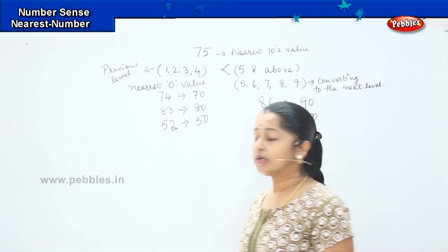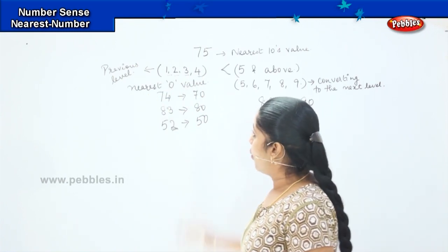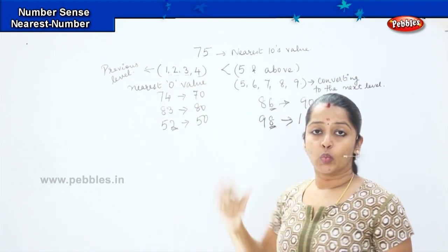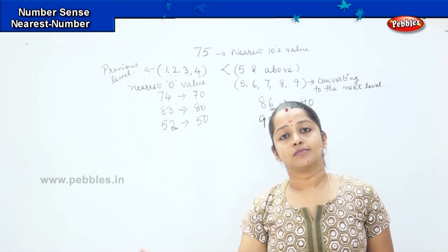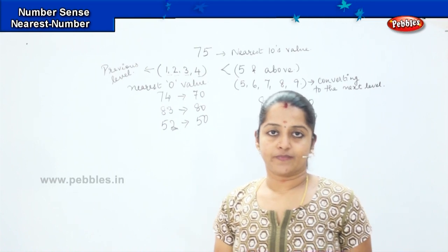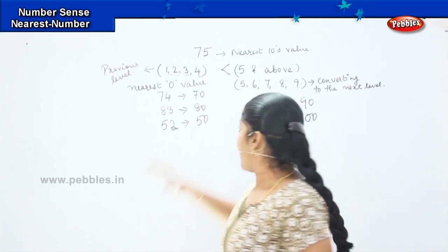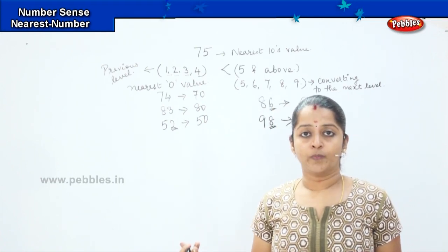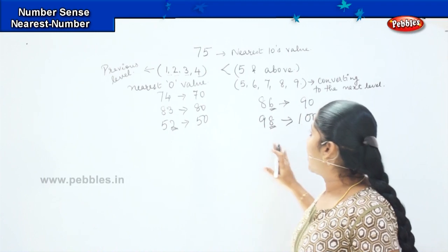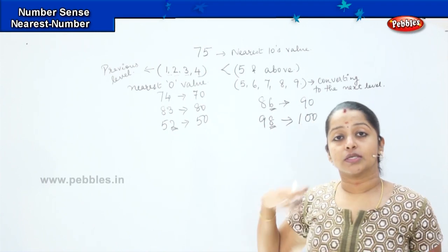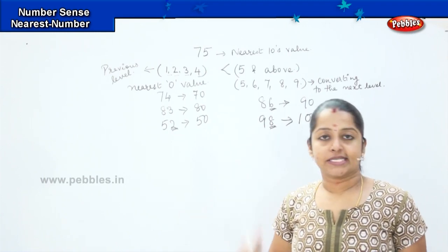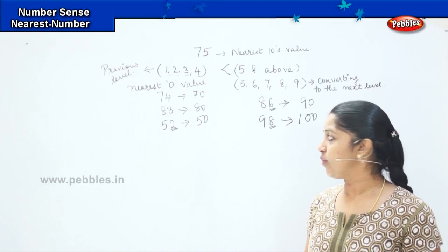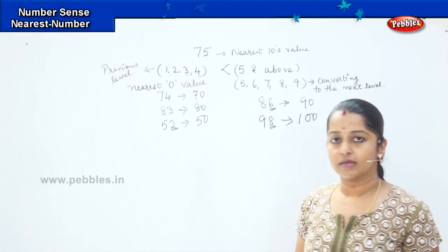So what did you learn, children? Whenever a number's ones digit falls from 1 to 4, we convert it to the previous tens digit. And whenever the ones digit is 5 or above, we convert it to the next tens digit. Shall we practice with a few examples?